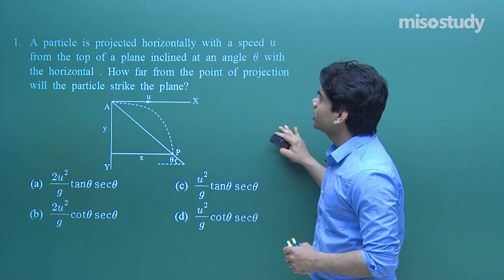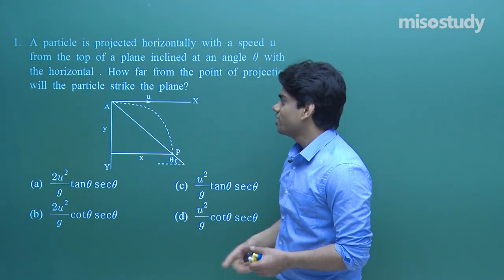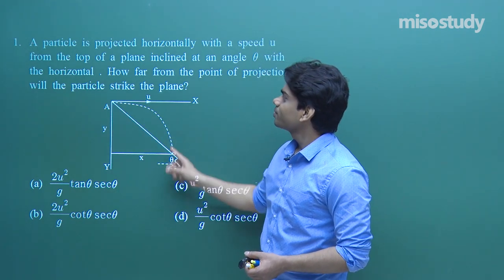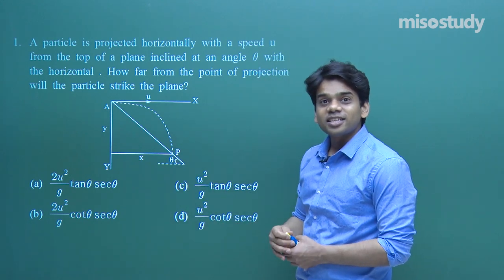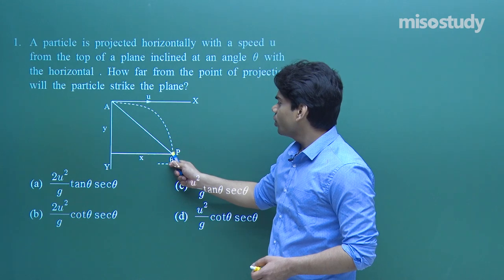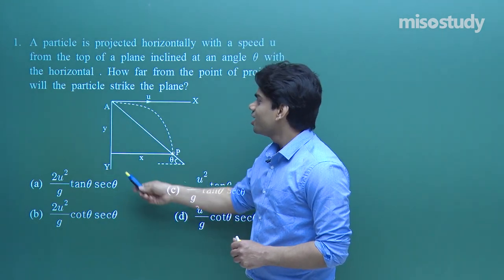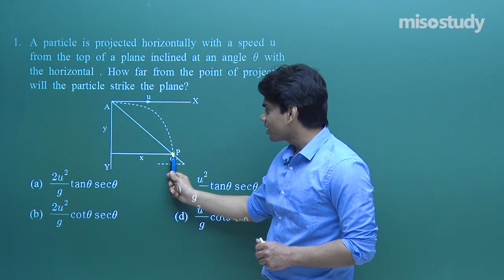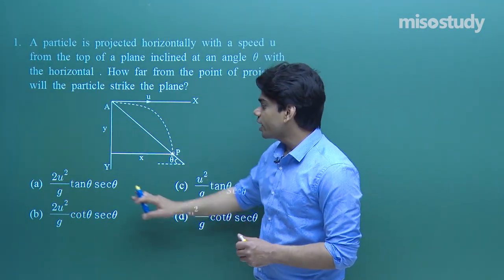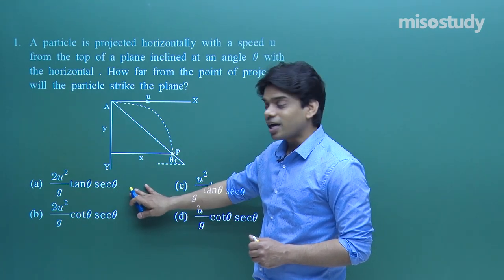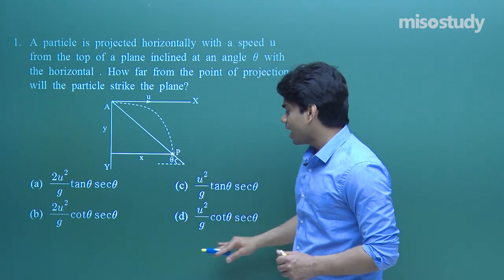First question: a particle is projected horizontally with a speed u from the top of a plane inclined at an angle theta with the horizontal. How far from the point of projection will the particle strike the plane? We need to find the distance AP — that is, where the particle strikes the inclined plane. The options are: A) 2u²/g · tan θ · sec θ, B) u²/g · tan θ · sec θ, C) 2u²/g · cot θ · sec θ, D) u²/g · cot θ · sec θ.